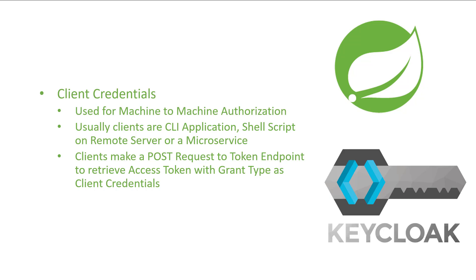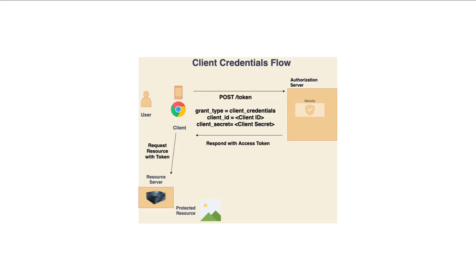For this reason, when using this flow, the clients will directly make a POST request to the authorization server with grant type as client credentials, and will also include the client ID and client secret to authenticate themselves. The authorization server will validate the credentials and, if they are valid, will generate an access token and send it back to the client.